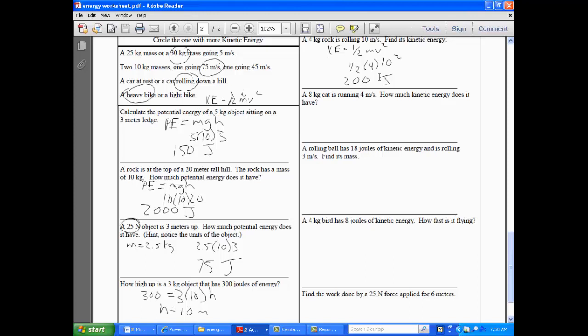All right. Next one. An 8 kilogram cat is running at 4 meters per second. How much kinetic energy does it have? 1 half mv squared. The cat weighs 8. It's moving at 4. 4 squared is 16. 16 times 4 is going to come out to be what? 64 joules of kinetic energy. So, again, you're seeing, guys, if you can do one, you can do them all.